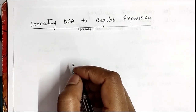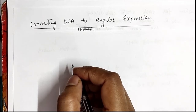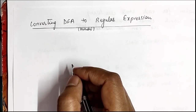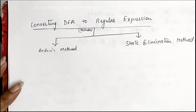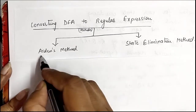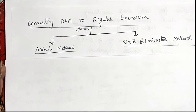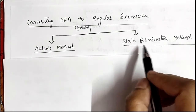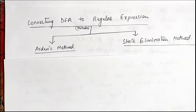Hello friends. In this video we cover the topic Arden's theorem. As we know, Arden's theorem or Arden's method is used for converting a DFA into a regular expression. There are two methods for converting a DFA into a regular expression: one is Arden's method and another is the state elimination method. In my previous video we already discussed the state elimination method, and now we cover the Arden's method.